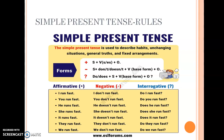He runs fast. He doesn't run fast. Does he run fast? — does is the helping verb, so it comes in the beginning. In simple present tense, for singular subjects — he, she, it, or any name of one person — you add s or es after the verb. For example: he runs, she runs, Aruna eats, Karan drinks. For plural subjects, there is no s or es after the verb.